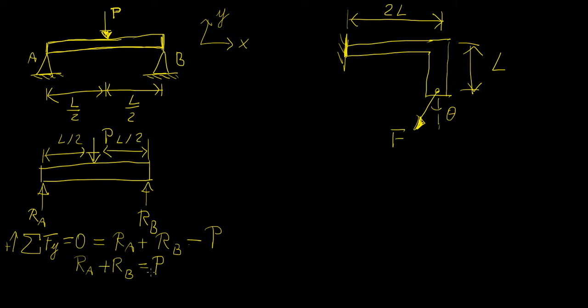Now we have one equation but two unknowns — we want to find RA and RB but we only have one equation. So how are we going to do this? This is where moments come in.